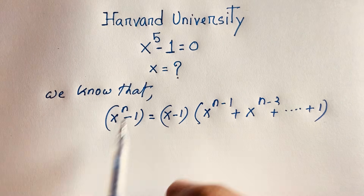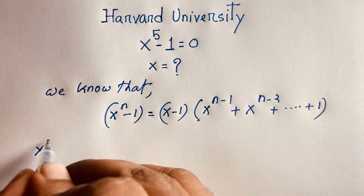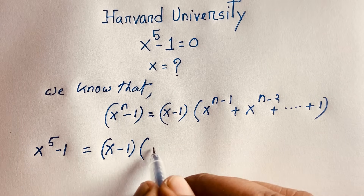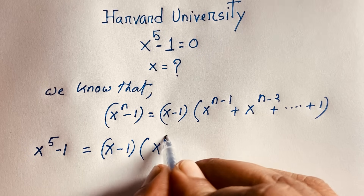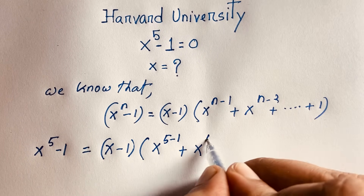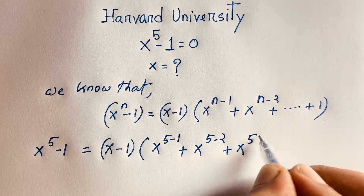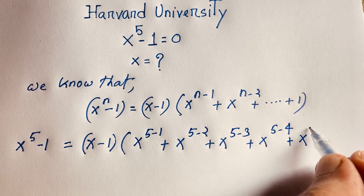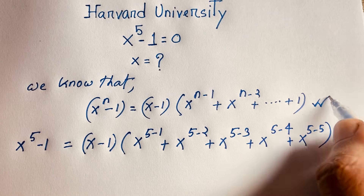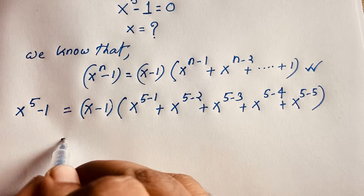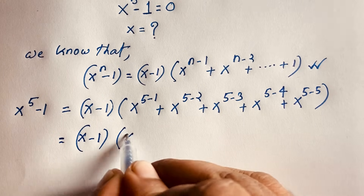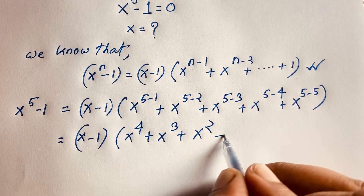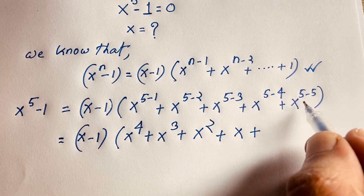Now we'll apply this to x to the power 5 minus 1. So we get x minus 1 times x to the power 5 minus 1, which is x to the power 4, plus x to the power 3, plus x to the power 2, plus x to the power 1, plus x to the power 0, which is 1.